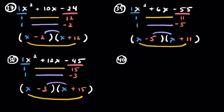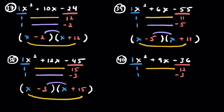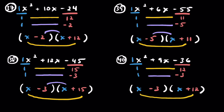Problem 40: x squared plus 9x minus 36. Leading coefficient of 1, negative 36 is our constant. Thinking 12 and 3 — those are 9 apart. Put the negative on the 3: positive 12 minus 3 gives positive 9. So (x + 12)(x − 3). Everything checks out. That's 40 down.